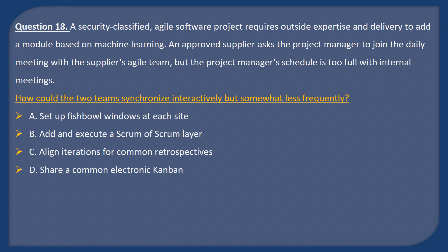Question 18. A security-classified Agile software project requires outside expertise to add a model based on machine learning. An approved supplier asks the project manager to join the daily meeting with the supplier's Agile team, but the project manager's schedule is too full with internal meetings. How could the two teams synchronize interactively but somewhat less frequently? A: Set up fishbowl windows at each side. B: Add and execute a scrum of scrums layer. C: Align interactions for common retrospectives. D: Share a common electronic Kanban.